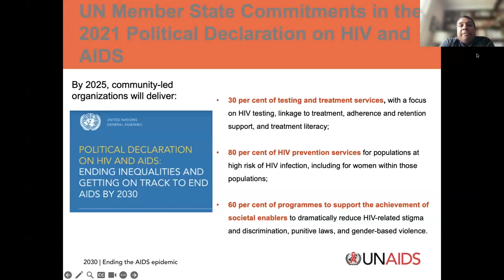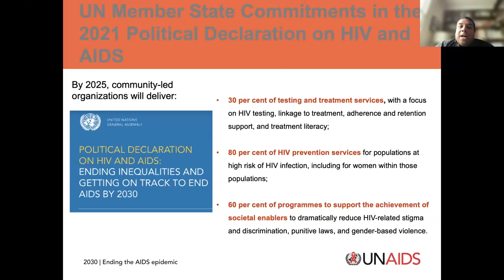UNAIDS, as you may be aware, works to a global strategy agreed by member state commitments. The last political declaration was in 2021, and there are three targets we really need to keep in mind for all UNAIDS programs and the HIV response — particularly with community-led monitoring: that 30% of testing and treatment services, with a focus on HIV testing, linkage, treatment, adherence, retention, and literacy, are led by communities; 80% of HIV prevention services; and 60% of programs to support the achievement of societal enablers. So the strategy establishes that we want communities and community organizations to be service providers, leading activities to get us over the last mile to our 95-95 targets.